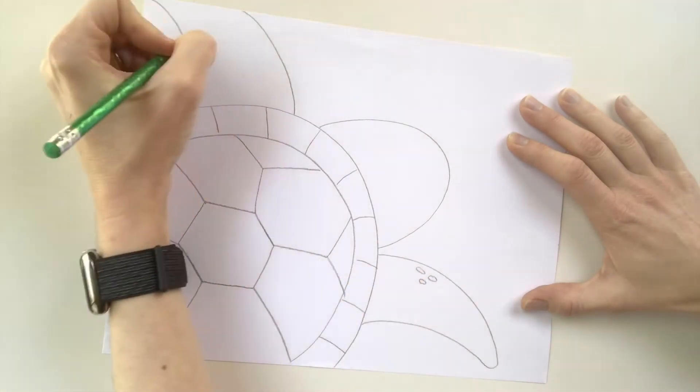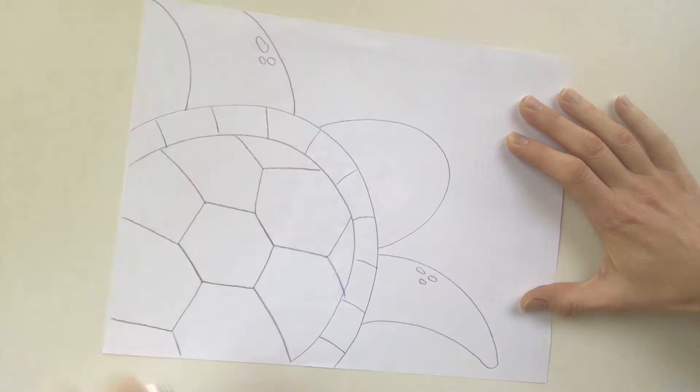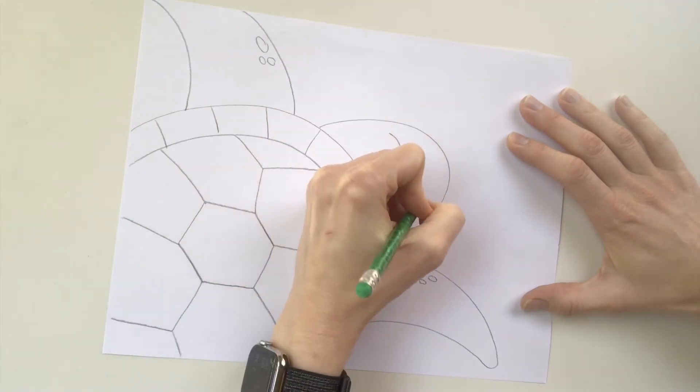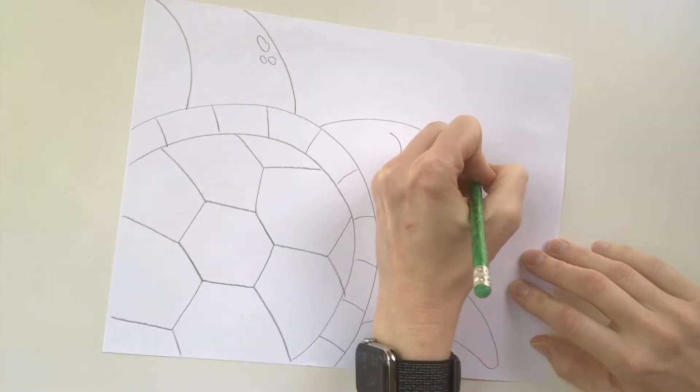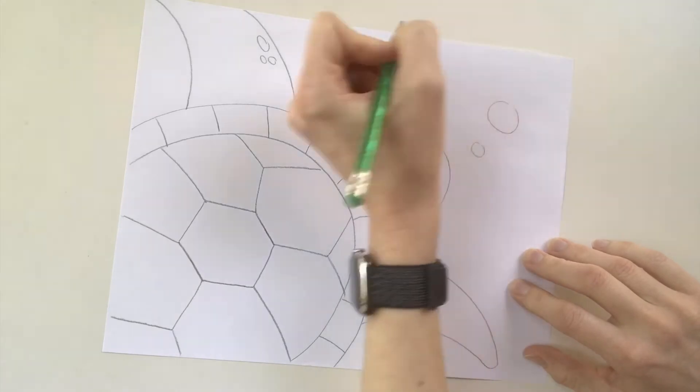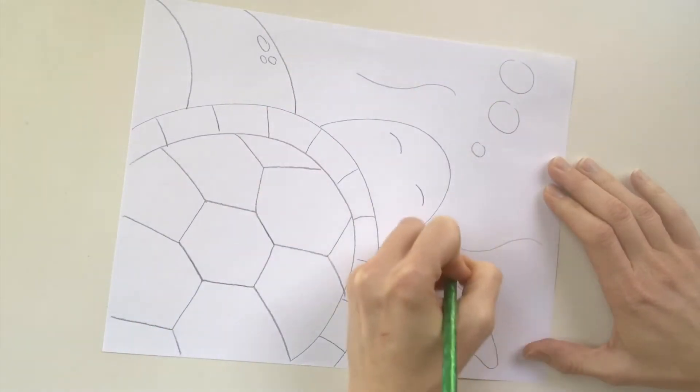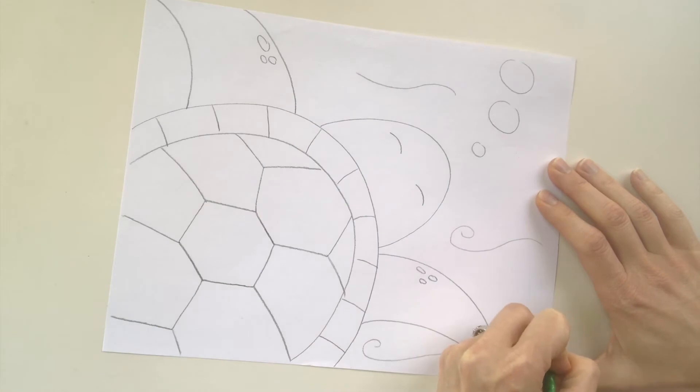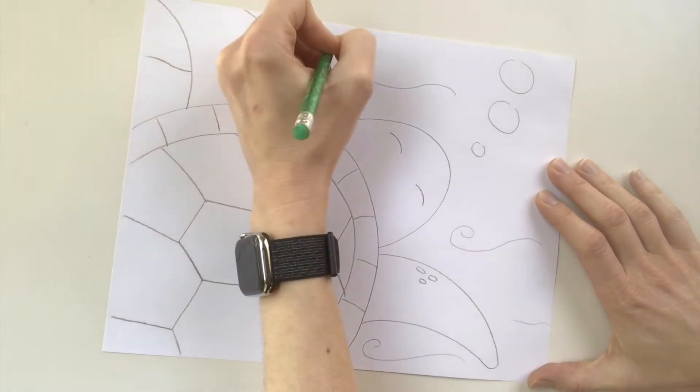On his flippers I'm making some texture with little circles. I'm doing some curves for his eyes so he looks happy and adding some bubbles for a fun detail. To make him look like he's moving I'm adding some curves and swirls in the background.